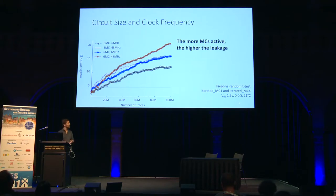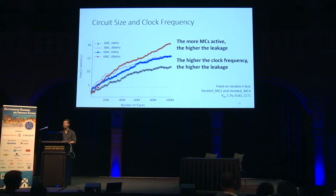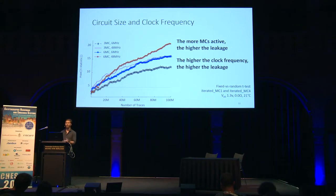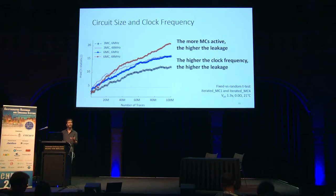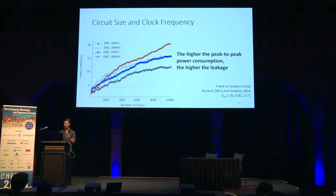With a fixed number of mixed columns — for example, the blue triangles and brown stars — we see that the higher the clock frequency, the higher the leakage. Since both circuit size and clock frequency relate to the peak-to-peak power consumption, we group them under one rule: the higher the peak-to-peak power consumption, the higher the leakage.